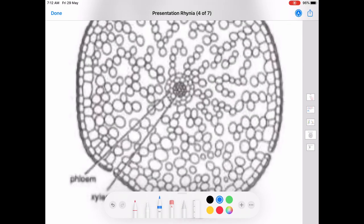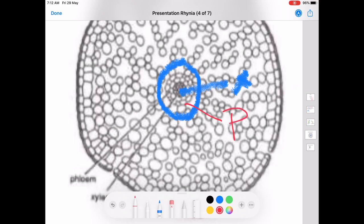It is having a central haplostele. This is the haplostele. The central portion is occupied by the xylem and the xylem in turn is surrounded by phloem. Here, the xylem core is smooth, so the stele is known as haplostele.